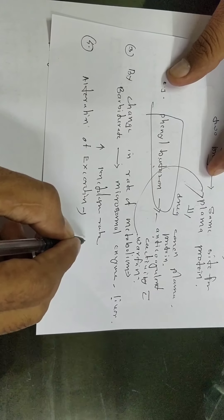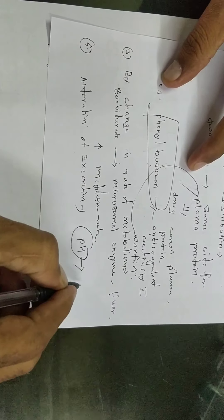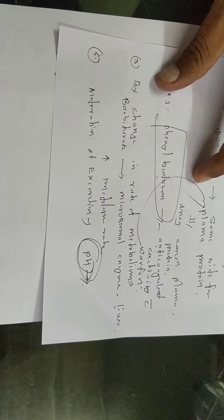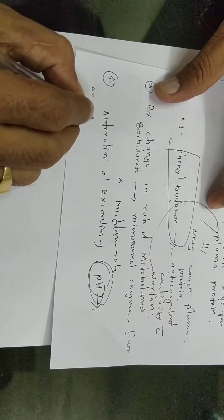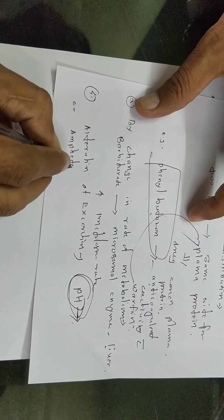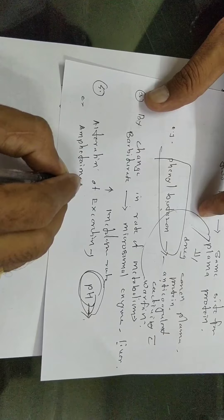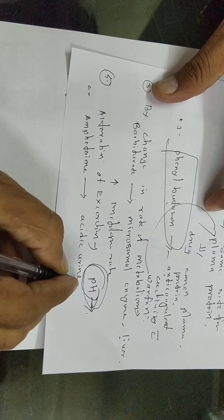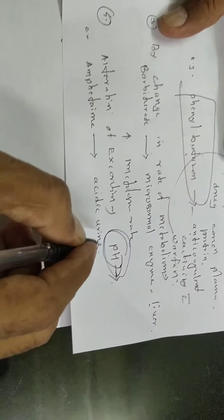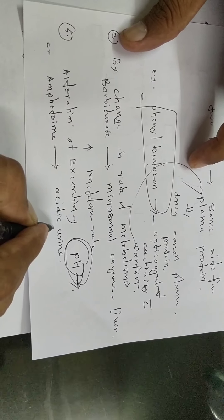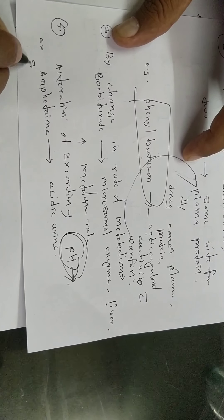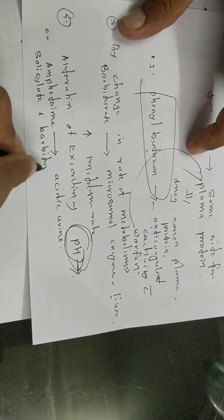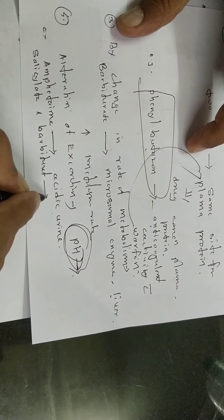Fourth: alteration of excretion. The excretion of many drugs depends basically on the pH in urine — that is the most important factor. For example, amphetamine, a CNS stimulant, is excreted in acidic urine. Excretion in basic conditions is very slow. Drugs like salicylates and barbiturates are excreted in alkaline urine.